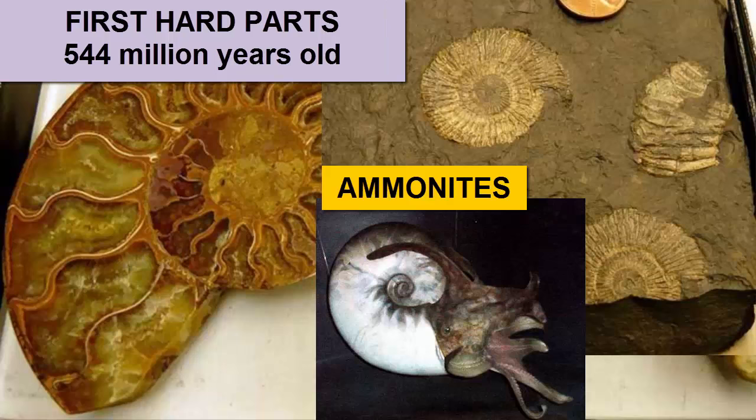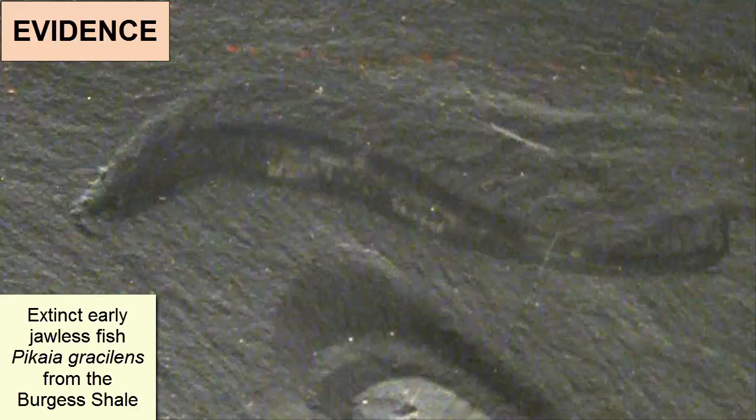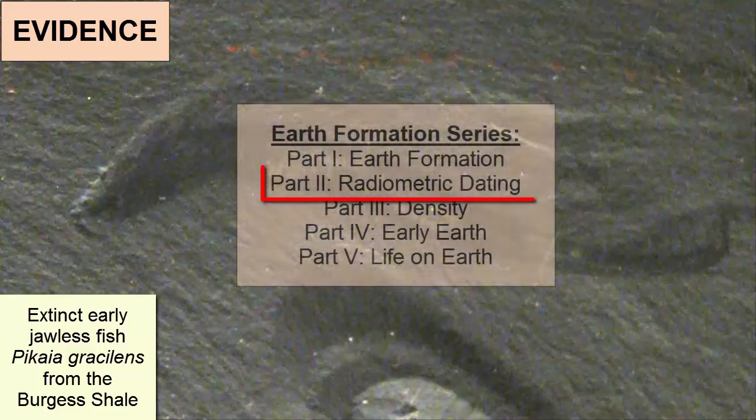Ammonites came next — a nautilus-like cephalopod. Imagine a giant octopus-like organism living in an ornate hard shell and floating at various depths within the water column. The first vertebrates, jawless fish with cartilaginous skeletons, evolved about 520 million years ago. The evidence for this timeline comes from fossils we find in rocks that we date through radiometric dating.